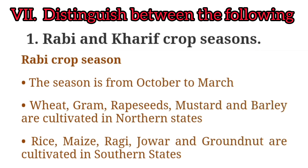Roman numeral VII — Distinguish between the following. First: Rabi and Kharif crop seasons. Rabi crop season: the season is from October to March. Wheat, gram, rape seeds, mustard and barley are cultivated in northern states.